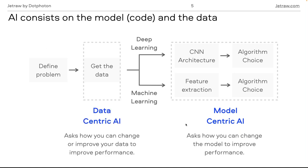You can also improve performance by targeting the data itself — by trying to improve the quality or how the data was acquired. Because today's seminar is about image quality, we will focus more on the data side for AI applications.